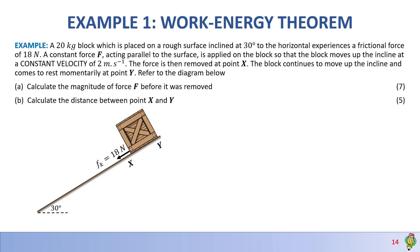We know that before point X the box will move at a constant velocity. So first we'll draw our free body diagram. Here I drew the free body diagram with FG reduced into its components, which is FG parallel and FG perpendicular. Don't forget the inclination angle is 30 degrees. If you are not sure how to correctly resolve FG into its components, please check out my Newton's second law video.